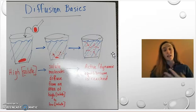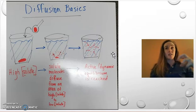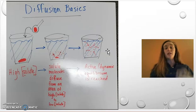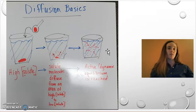Active, or dynamic, sometimes it's called equilibrium, is the idea that yes, the molecules are now all spread out, but they're still constantly moving. They're just moving in order to be equally spread out in this solution. So those are the basics of diffusion.